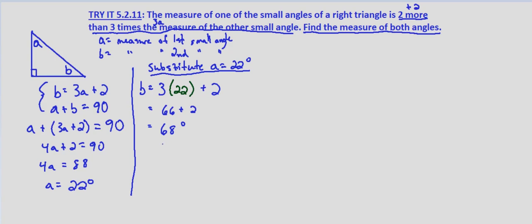Now what if we use our second equation, A plus B equals 90? We solved for A equals 22, so 22 plus B equals 90. Subtract 22 from both sides, and we get B equals 68.